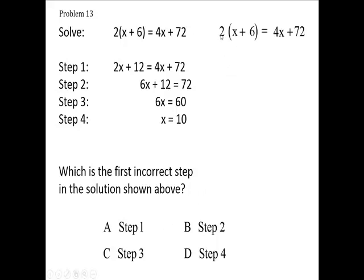Now, you're going to distribute 2 times x, 2 onto the x. 2 times 6 is 12. Bring down the other two numbers. So step 1 is correct, isn't it?